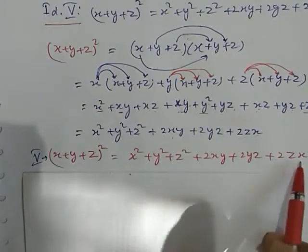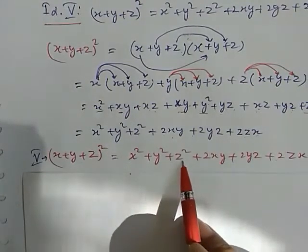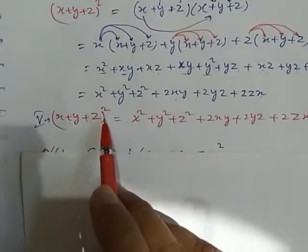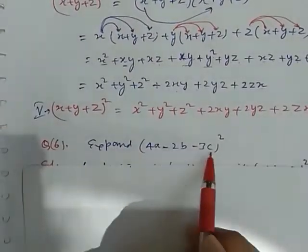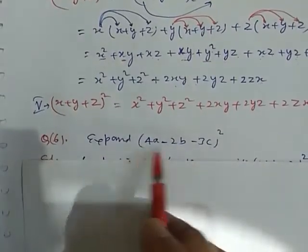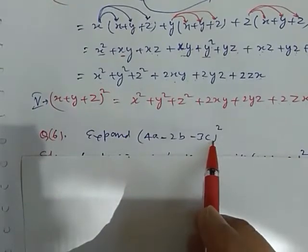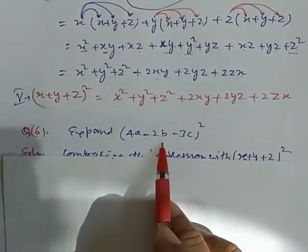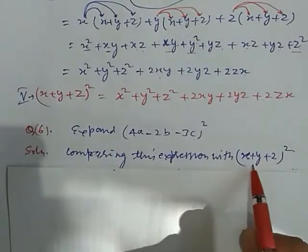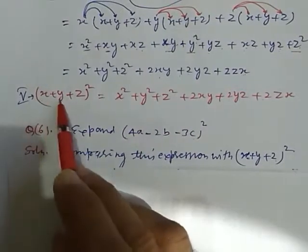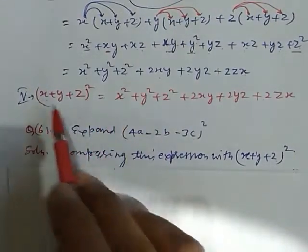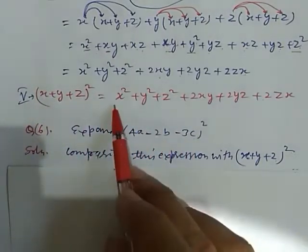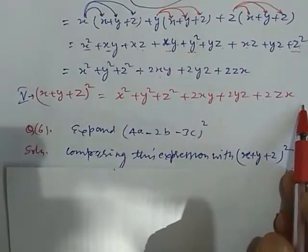So, let's memorize this identity. By help of this, by comparing, we can factorize any other problems. This is our fifth identity. Now, we learn how to expand this polynomial with the help of this identity. Here is our identity, here is our polynomial. Comparing this expression with x plus y plus z whole square. When we compare, what is the value of x, y, and z here? We just write down the values and get the solution directly.